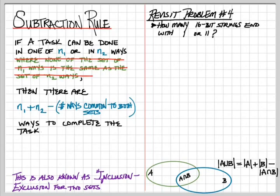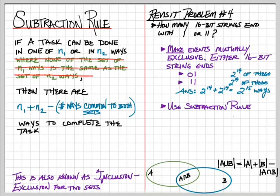So let's do a brief visitation back on problem four and realize that we could have approached it a different way. I can embrace the fact that they overlap and use the subtraction rule. So it's going to be the number of strings that end in 1 plus the number of strings that end in 1,1 and subtract the number of strings that end in both 1 and 1,1.